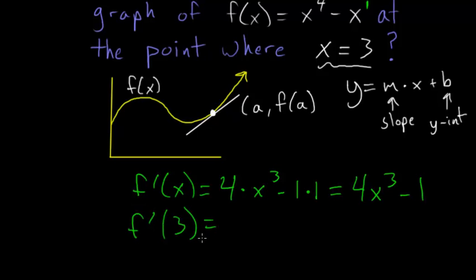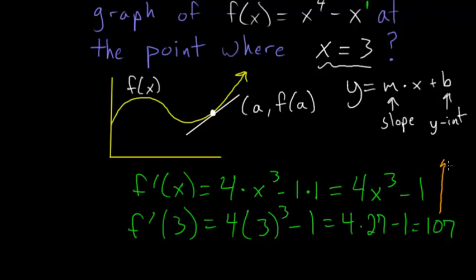to find the slope of the tangent line at that point. So plugging 3 in for x we have 4 times 3^3 - 1, 3^3 is just 27 and 4 times 27 would just be 108 - 1 would be 107